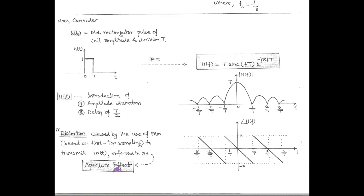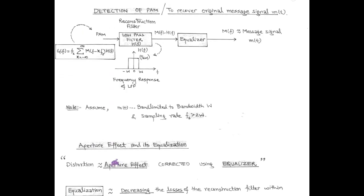So while transmitting a PAM signal, there is an aperture effect which is undesirable and it should be removed at the receiver side. For the recovery of the modulating signal m(t) from the PAM signal with aperture effect, we first pass the PAM signal in frequency domain G(f) through a low pass filter, followed by an equalizer. The function of the equalizer is to reduce the aperture effect. The demodulation of PAM signal is shown by a block diagram consisting of a reconstruction filter (low pass filter) and an equalizer, whose function is to suppress the aperture effect.